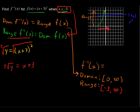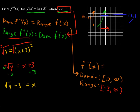But we know that x is greater than or equal to negative 3, so we know we're only going to take the positive square root. We'll take out that negative, and then we just have the positive square root of y. Now we subtract 3 from each side, and we get the square root of y minus 3 equals x. The last step is to swap the x and the y.